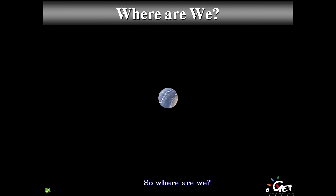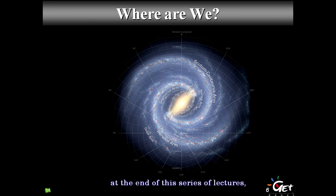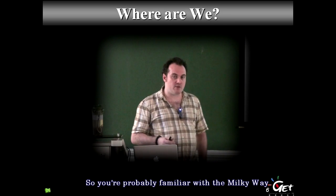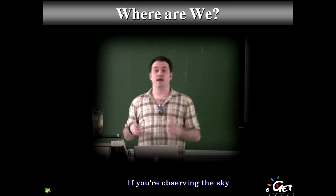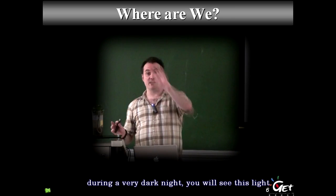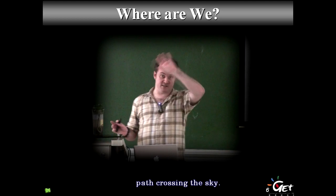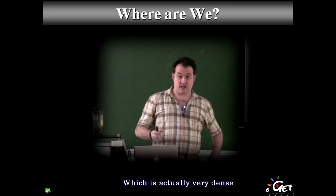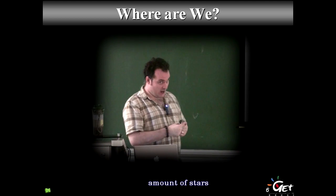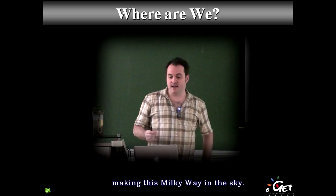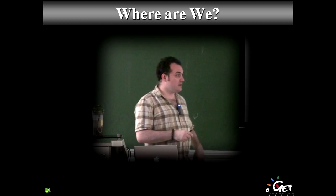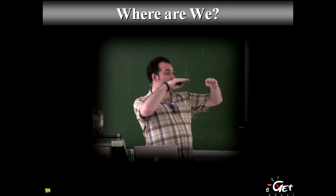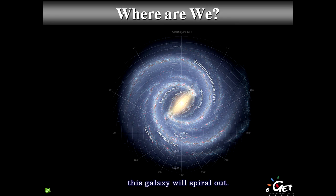So where are we? This is a representation of our own galaxy, the Milky Way. If you observe the sky on a very dark night, you'll see a faint path crossing the sky — that's the Milky Way, a very dense band of stars. This is our own galaxy, seen edge-on, a spiral galaxy with spiral arms. We'll come back to all those notions later.